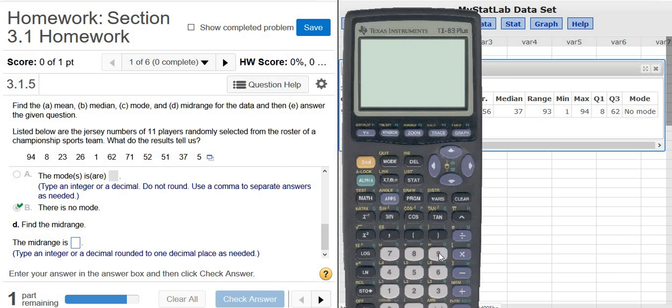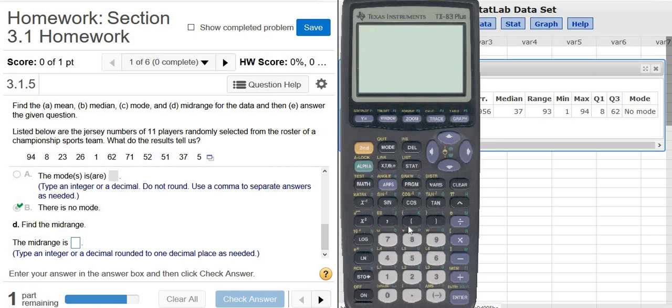It's max, so 94, plus the min. That's 95, and then you divide that by 2. 47.5. If you put it in your calculator all at once, it's important to have parentheses. Parentheses, 94, plus 1, parentheses, divided by 2.